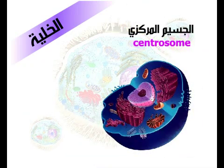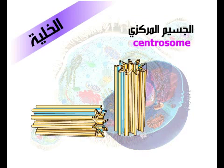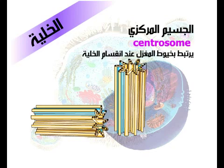الجسيم المركزي. توجد هذه العضيات في الخلايا الحيوانية غالباً بالإضافة إلى بعض أنواع الطحالب. يتكون الجسيم المركزي من مريكزين، يتألف كل منهما من تسعة مجاميع من الأنابيب، وللجسيم المركزي دور في عملية انقسام الخلية.